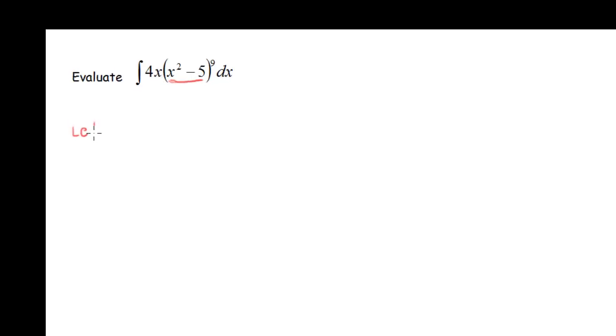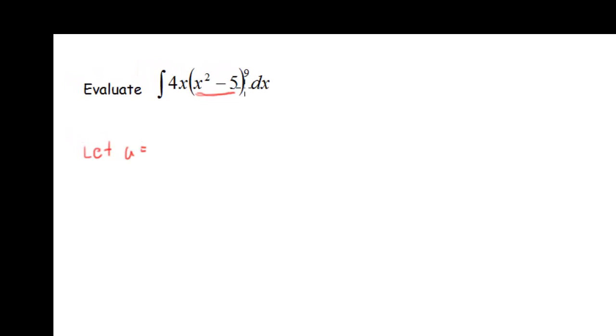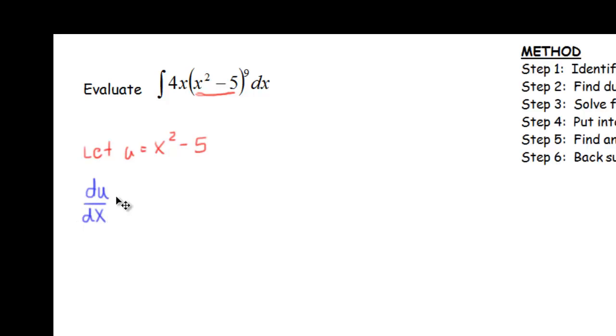Here's our first example. We have 4x times (x² - 5) raised to the ninth power. My guess is that I'm going to let u be the stuff inside the parentheses that's being raised to the power. So u is going to be x² - 5. Step 2, we're going to find du/dx. In this case, our du/dx is going to be the derivative of x² - 5, so that's 2x.